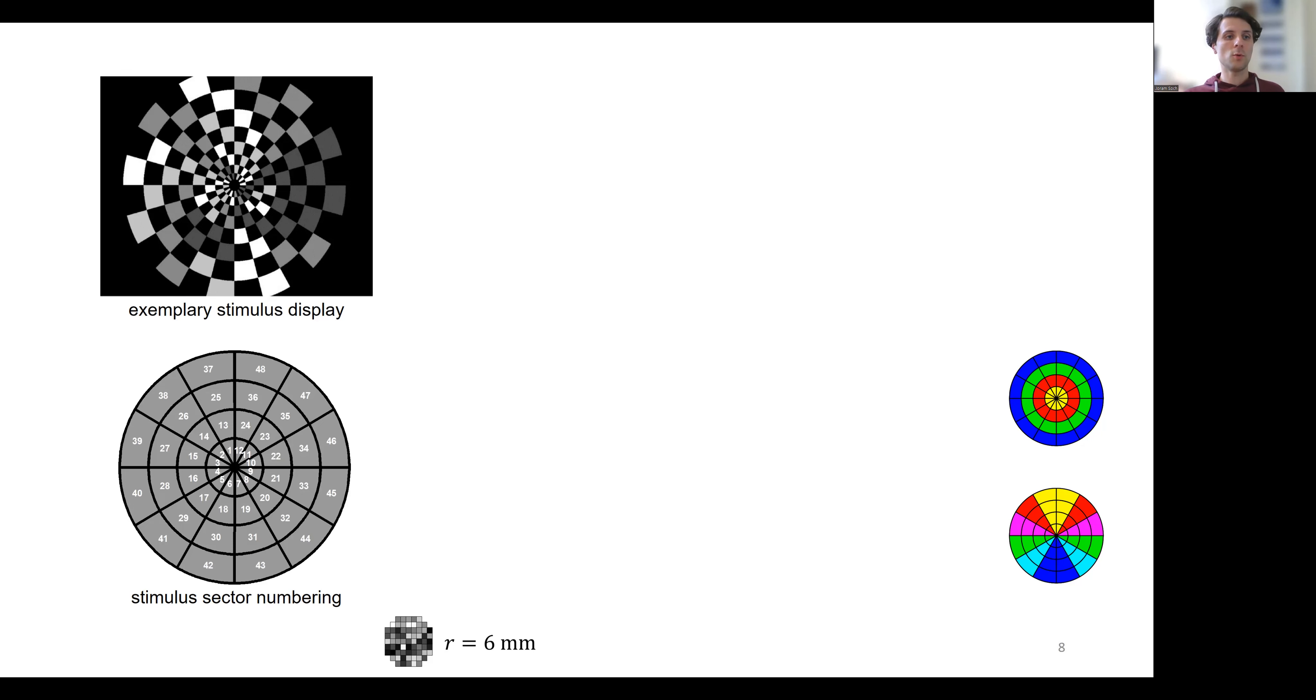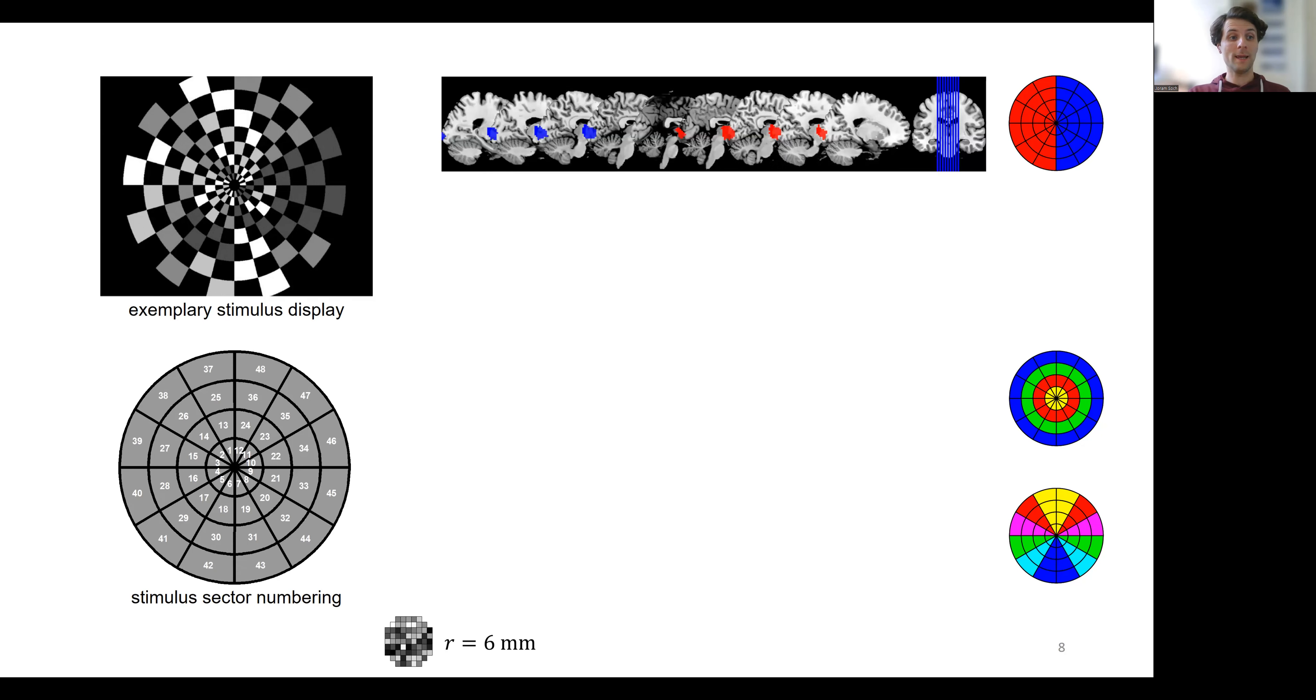In this way, we were able to confirm a priori plausible hypotheses about the well understood visual system, for example, stimulus processing in the contralateral hemisphere.